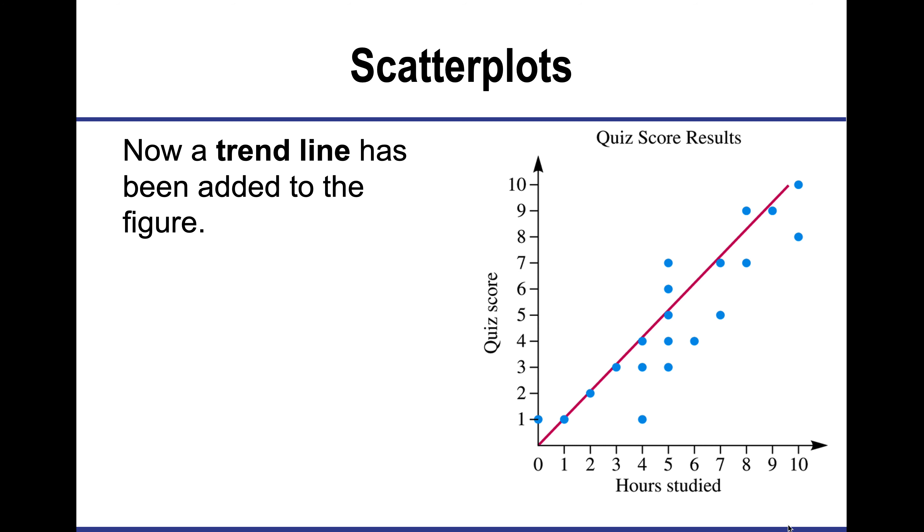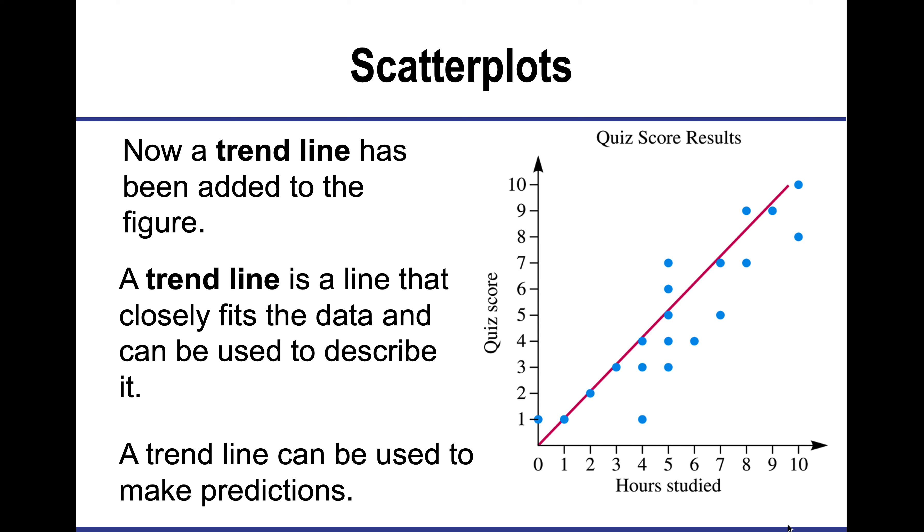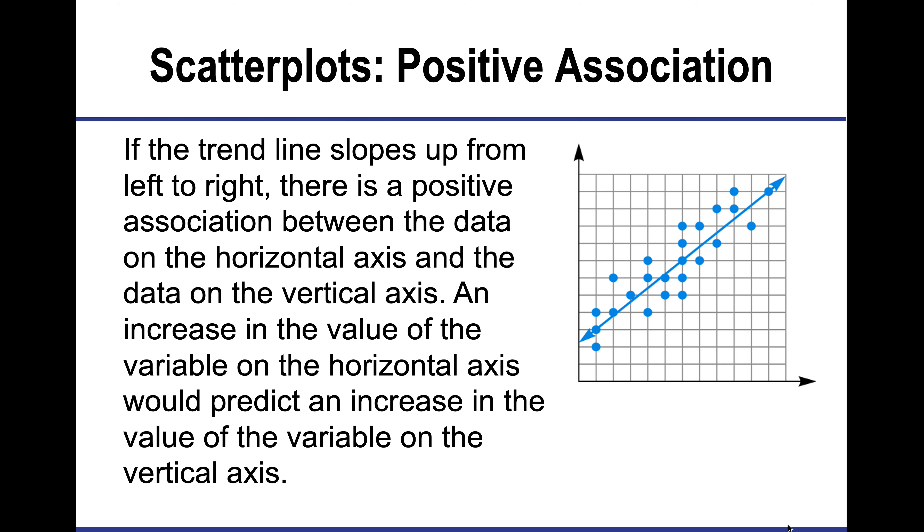A trend line is drawn through the center of the cluster. So I'm trying to hit as many of those points as possible. A trend line closely fits the data and can be used to describe it. So I can use this line to make predictions. So if I look at this line, I look at the data, it looks like the more that they study, the higher the quiz score, which probably makes sense.